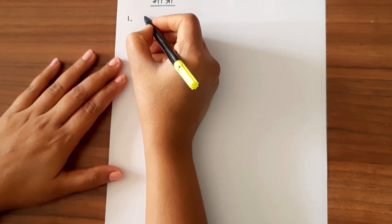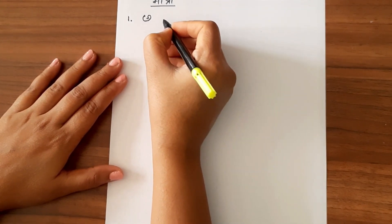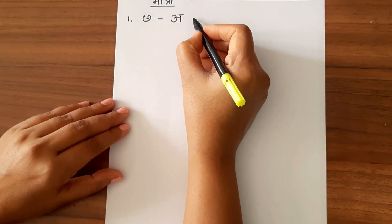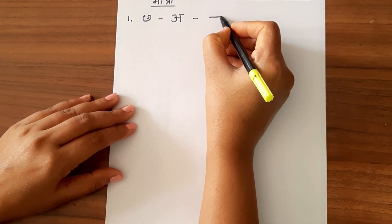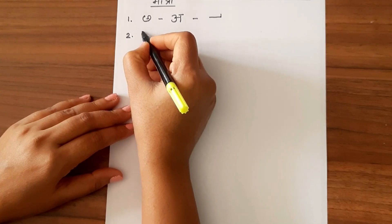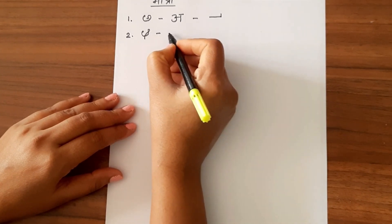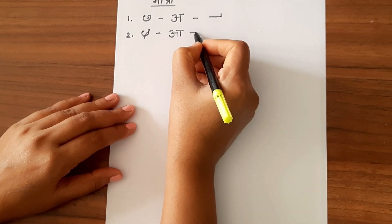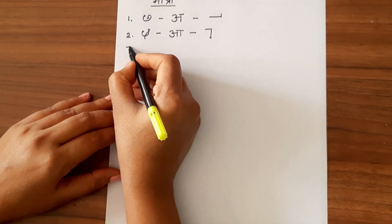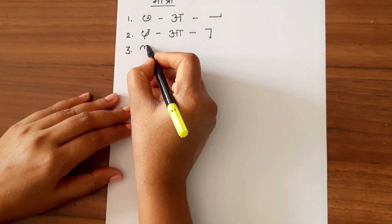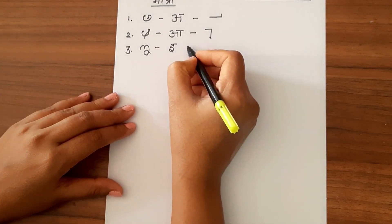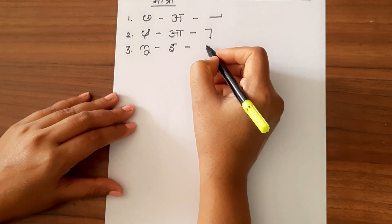First one is O and the matra is like this. Second matra is, and the matra is ii or harso, ii or we can say chhoti ii.